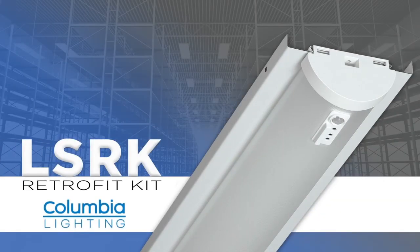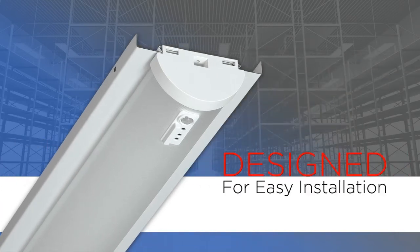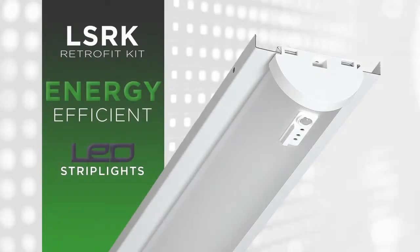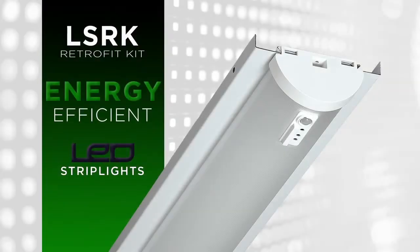Introducing the LSRK Retrofit Kit from Columbia Lighting. The LSRK is designed for easy installation and can convert fluorescent strip lights to energy efficient LED strip lights in less than 5 minutes.